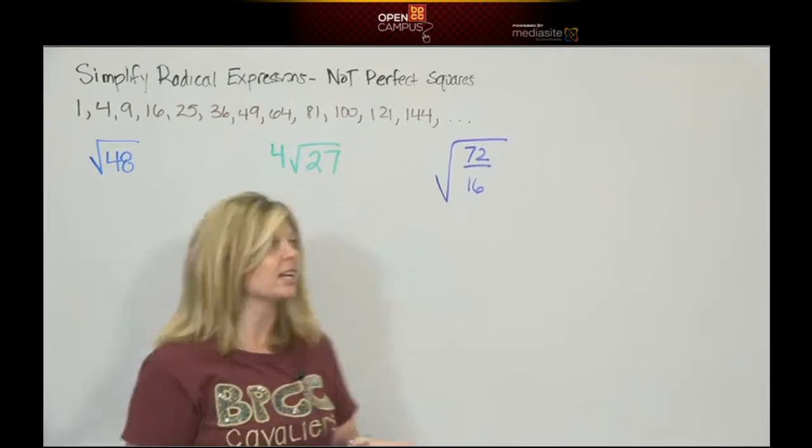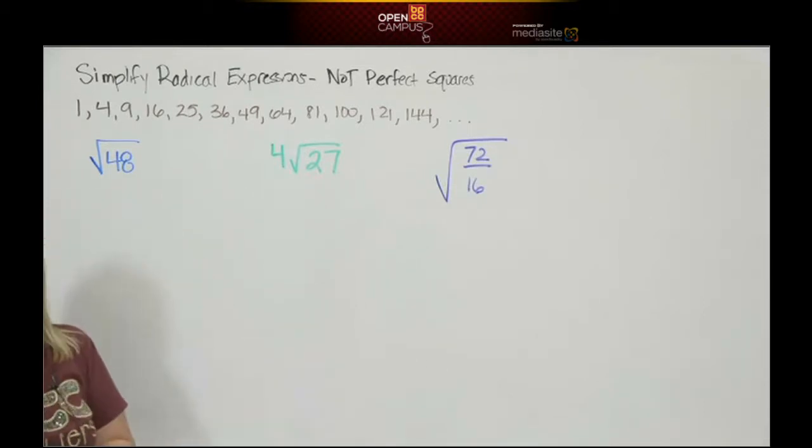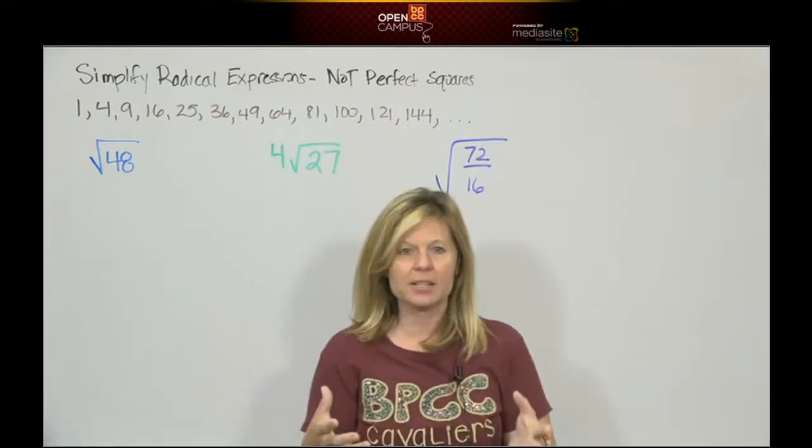We're simplifying radical expressions that contain square roots. If you look here, I have the square root of 48. And as we know, 48 is not a perfect square.